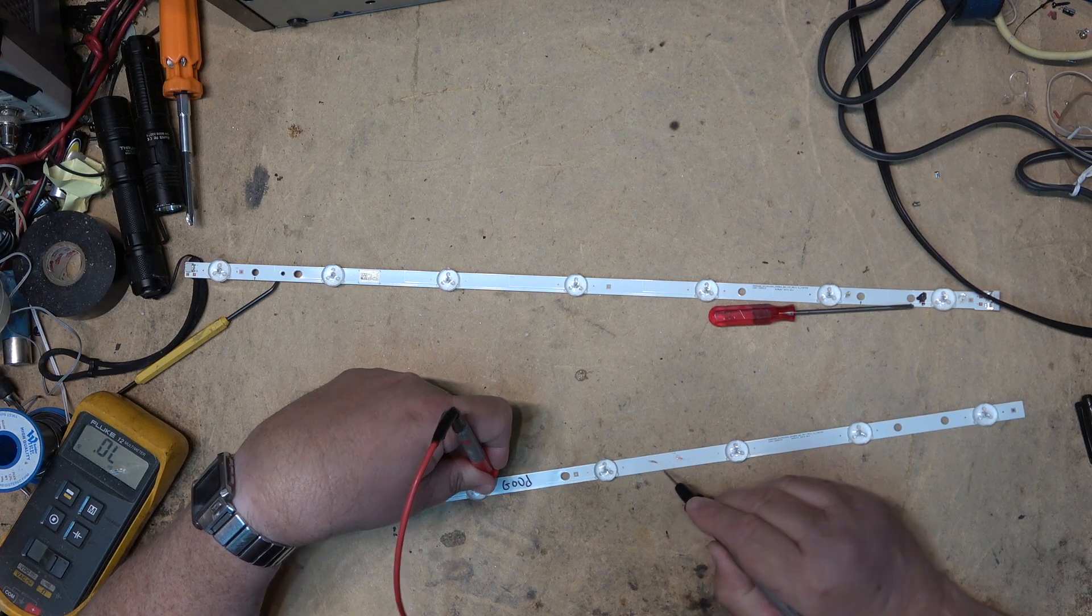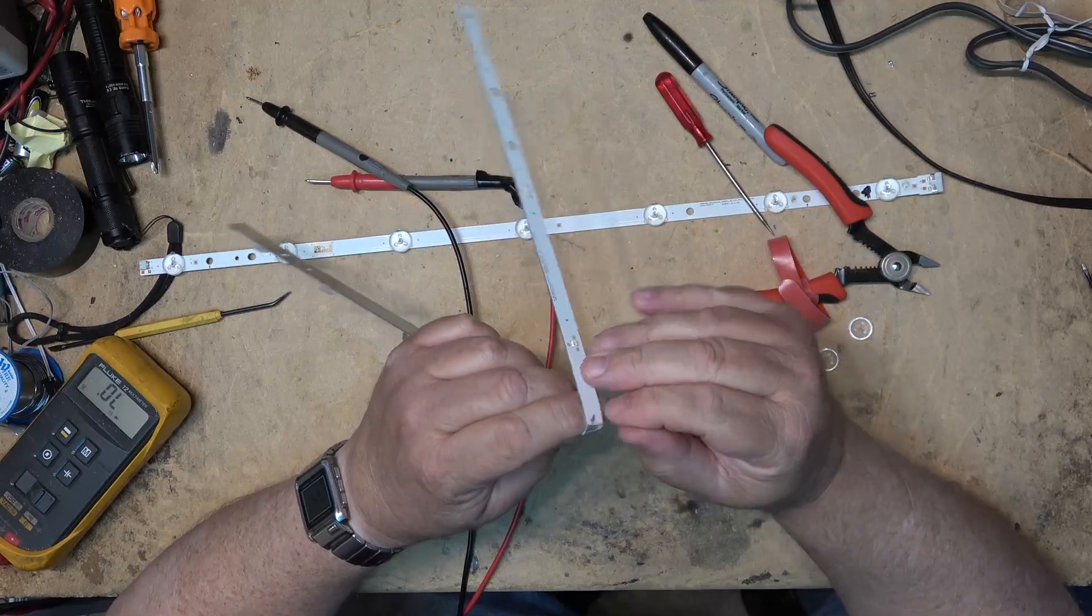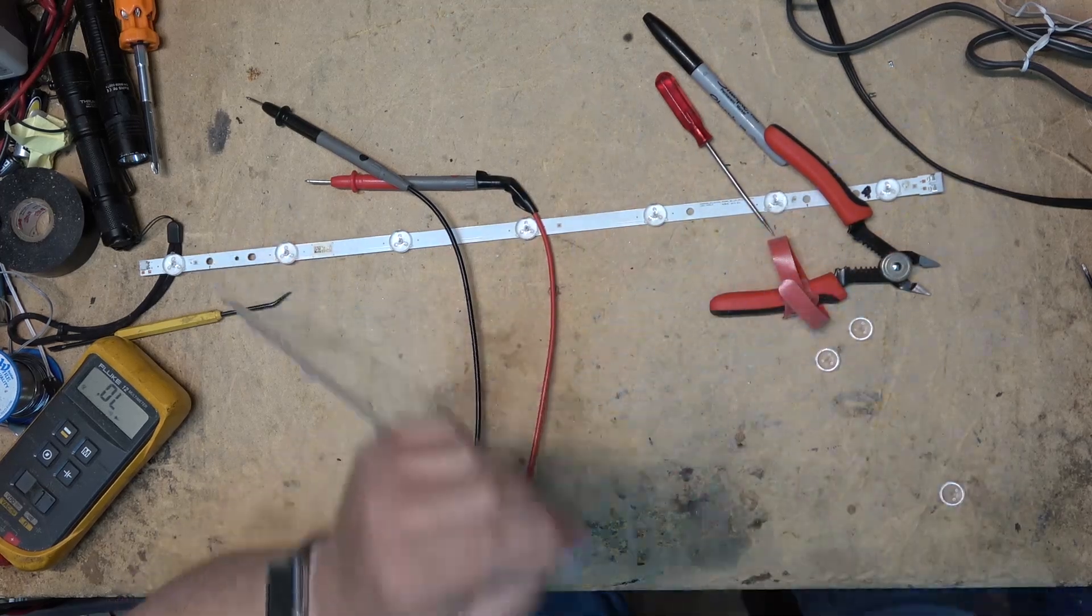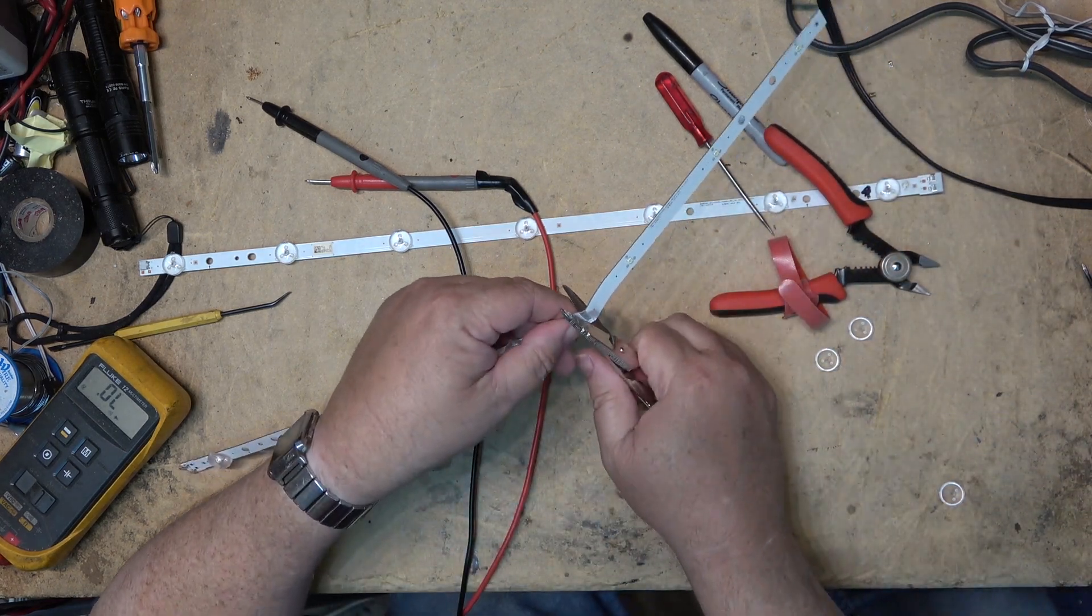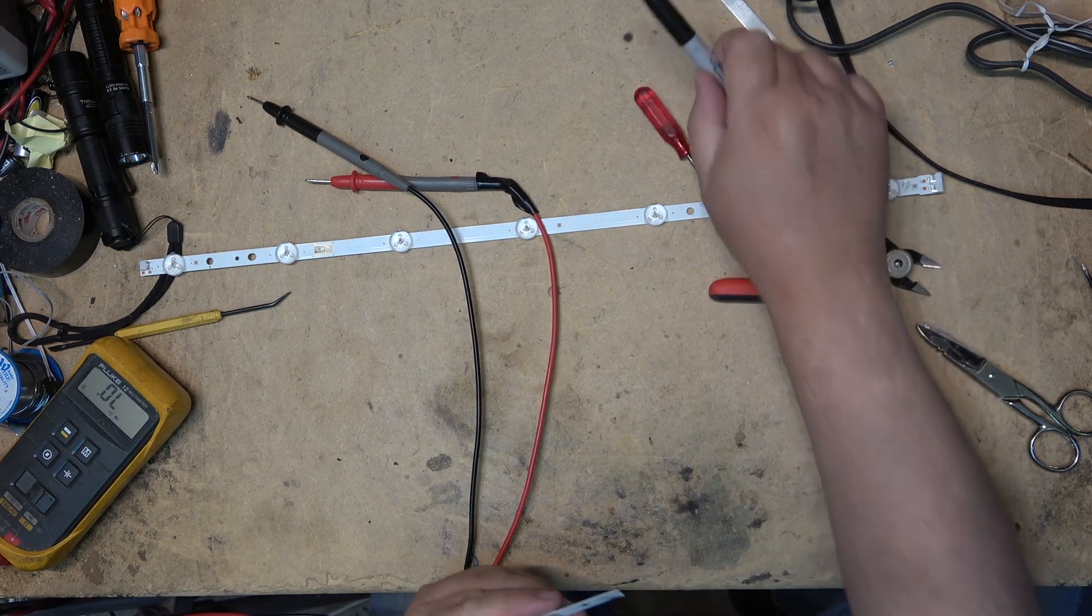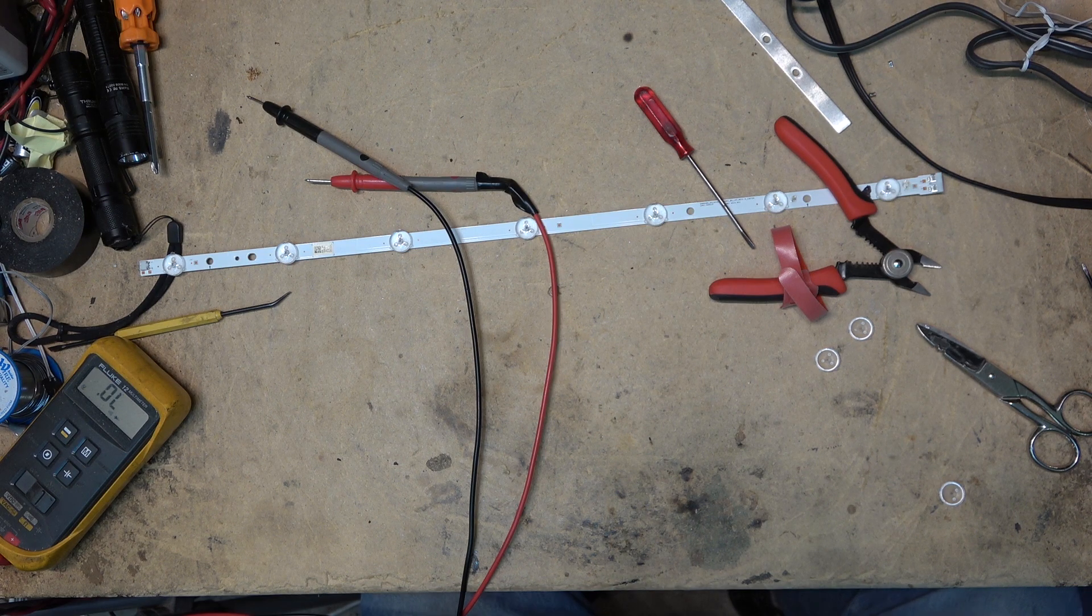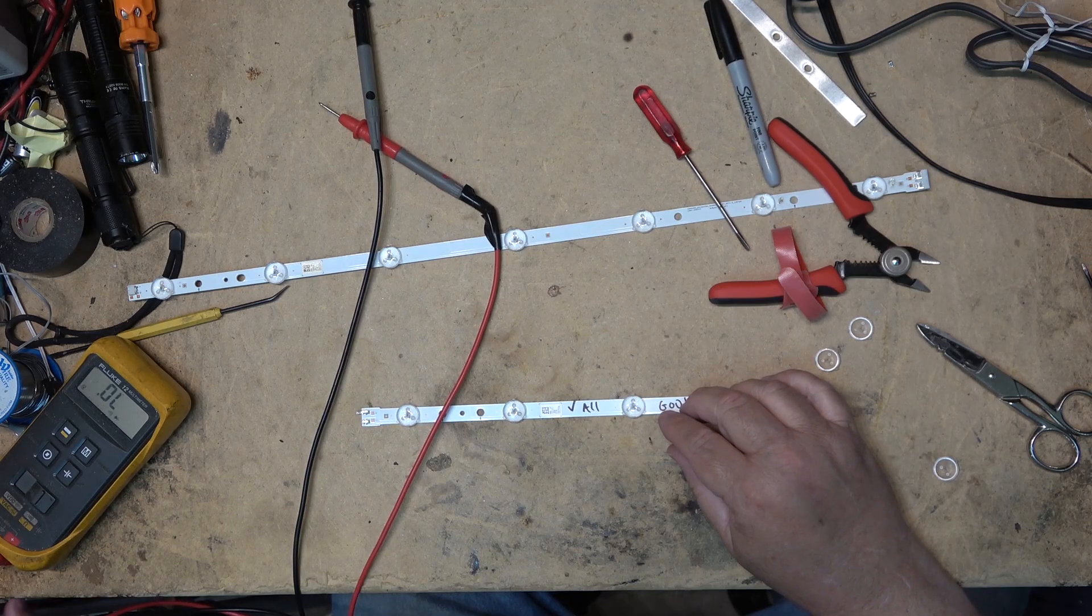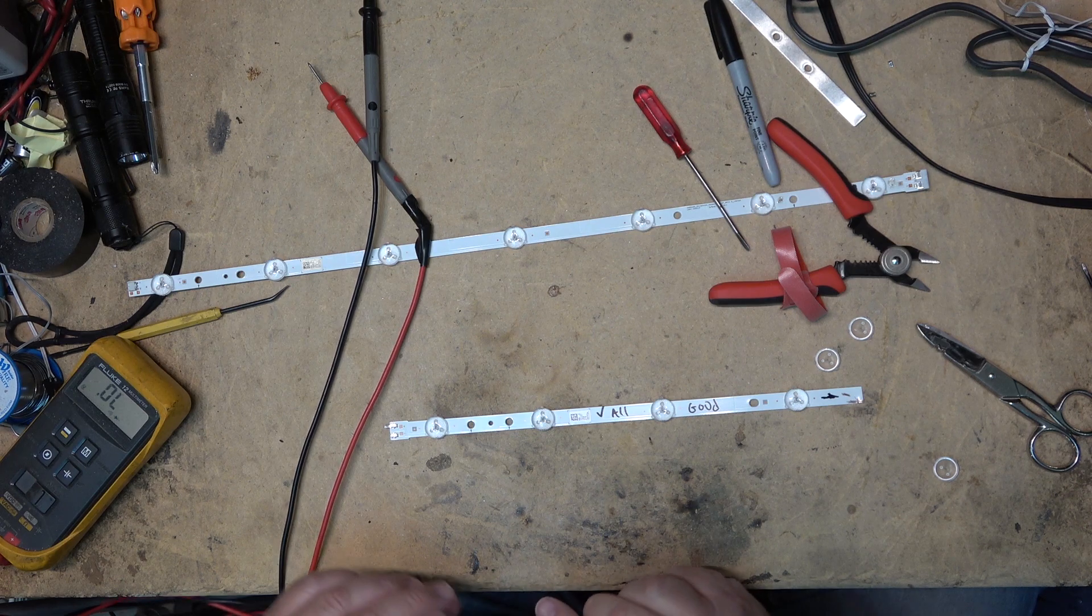And that one lights up. So if I cut it right here, get my good old trusky snips out and just cut this in half, now I can apply 12 volts, turn this into a little 12 volt strip. Great for bench lighting or something, but 12 volt strip.